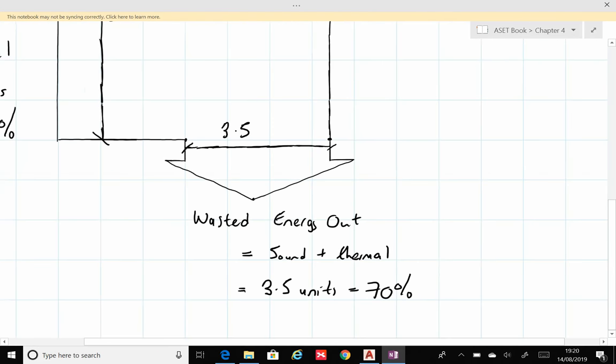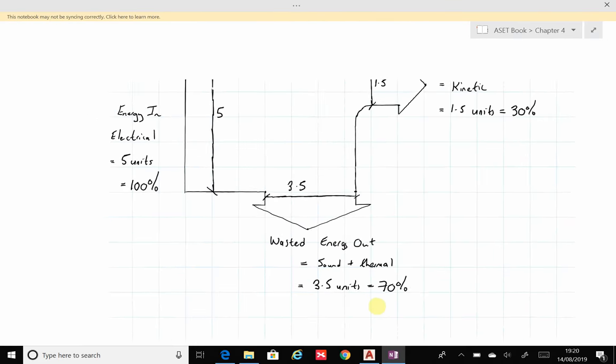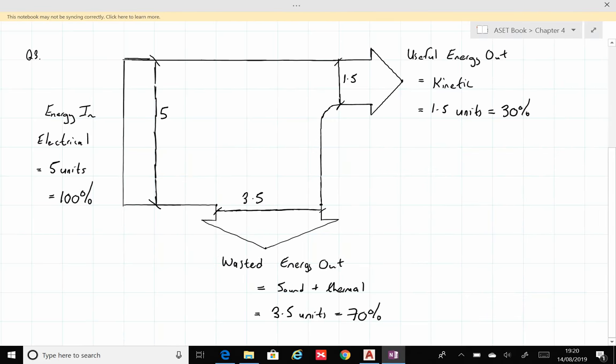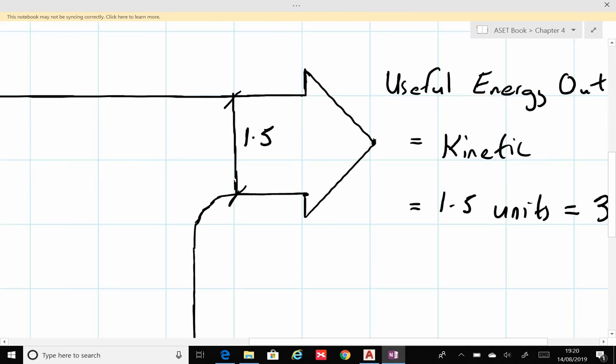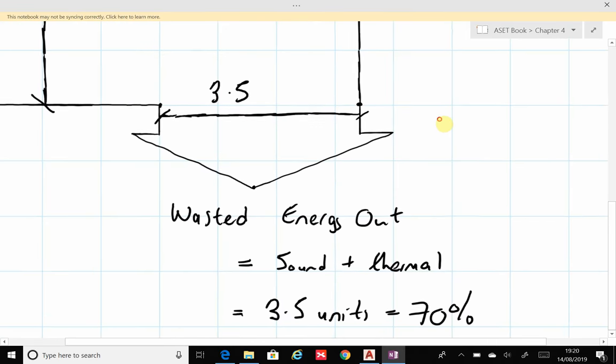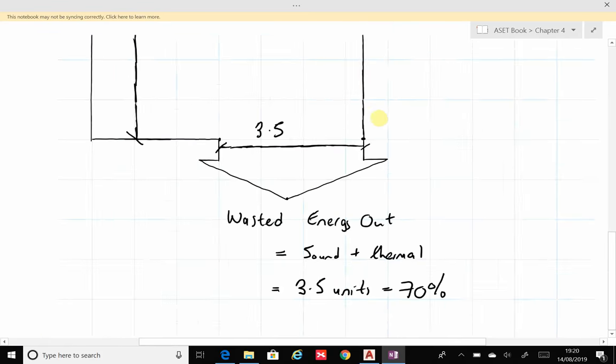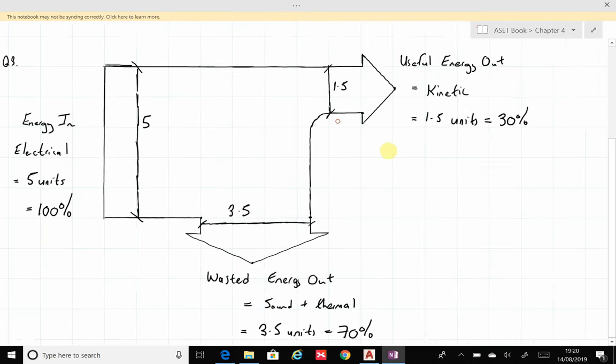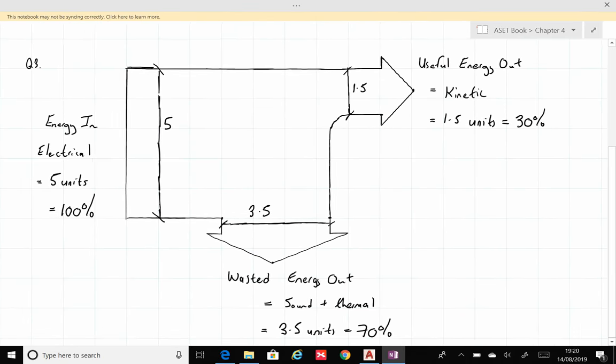The wasted energy coming down corresponds to 3.5 units, and that being of course sound and thermal, and those 3.5 units represent 70 percent of the total energy. If you look very carefully, the total energy into the system, which is represented by five units, does indeed equal the total energy leaving the system, which is the useful energy output of 1.5 added together to the wasted energy which is 3.5. So the principle of conservation of energy is indeed complied with in this diagram.